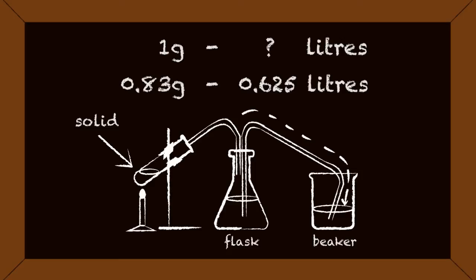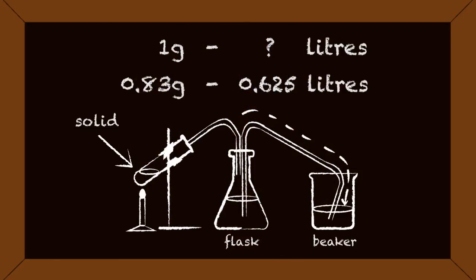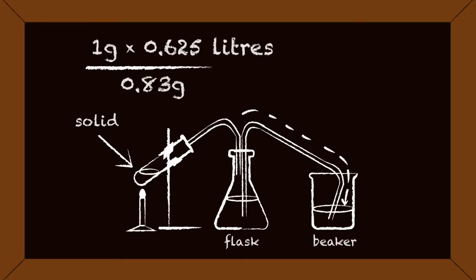Pause, calculate and continue when ready. The answer is to divide 0.625 liters of oxygen produced by 0.83 grams. This means that 1 gram of oxygen gives you 0.753 liters of oxygen.